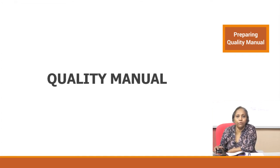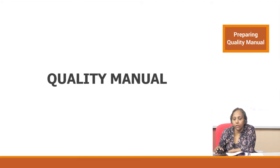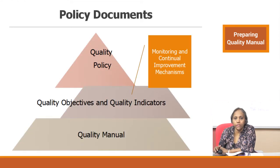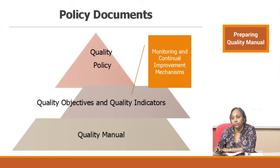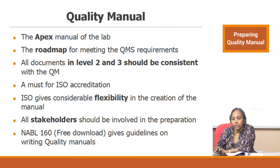These are the Level 1 documents, which include the quality policy, the objectives and indicators, and the quality manual. Now we are going to talk in detail about the quality manual. It is the apex manual of the lab and it is a road map for meeting the quality management system requirements. All documents in Level 2 and 3 should be consistent with the quality manual — the doing documents, the activity-capturing documents, and formats.